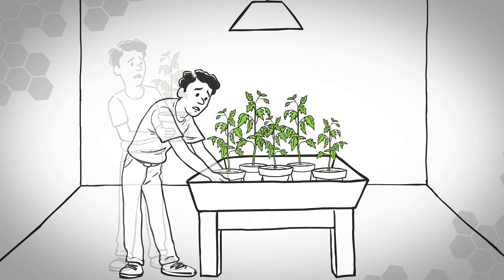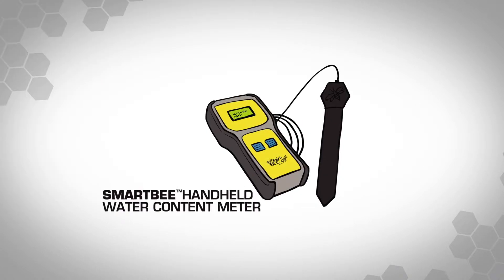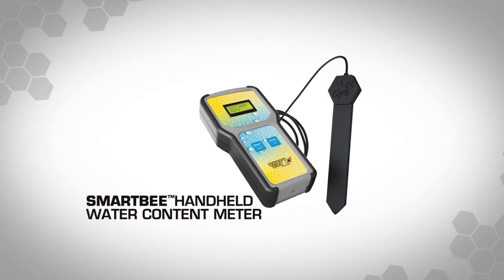Thankfully, taking the guesswork out of ensuring your plants have the right volume and temperature of water is now a thing of the past with the Smart Bee Controller's handheld water content meter.